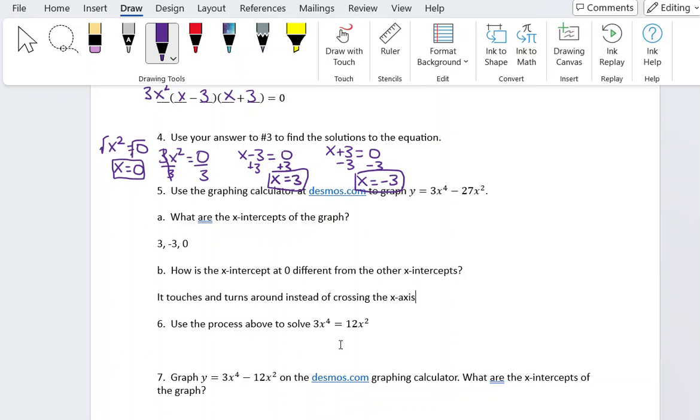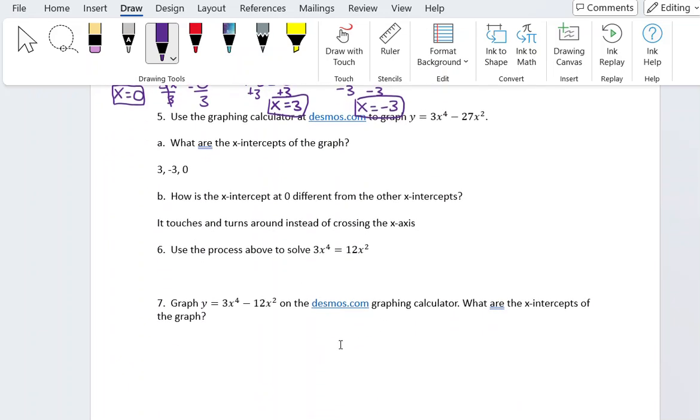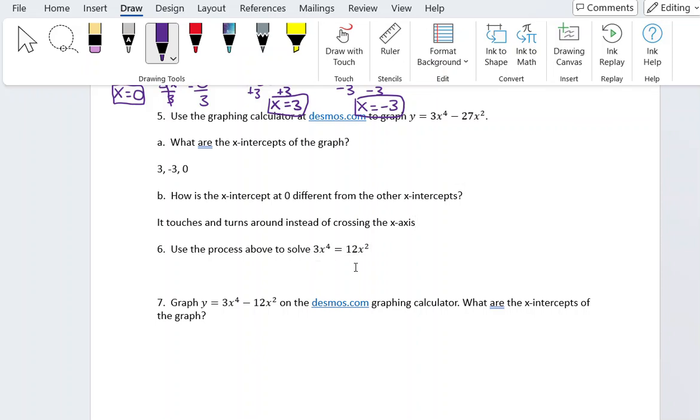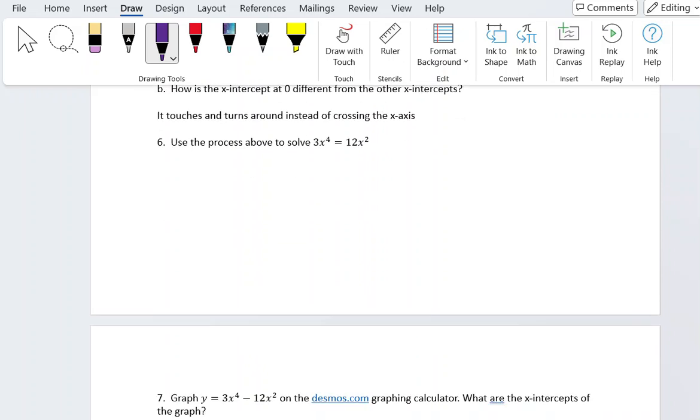So now we're going to repeat the process above to do another example. This one is 3x to the fourth equals 12x squared. I'm going to move this problem out of the way so I have a little bit more space. We're going to start with moving the 12x squared over so that we have zero on one side of the equation.